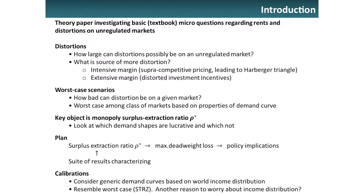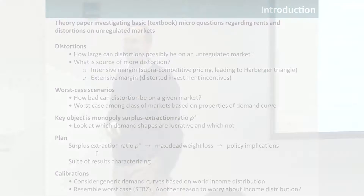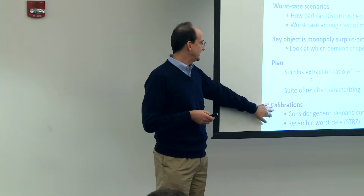Once we've done that — that's the first half of the talk — we're going to spend a lot of time discussing the geometry of demand curves: if you have a particular market, what things to look for, a suite of results characterizing rho star. Then, if you don't ask any questions, we'll get to the empirical part — some calibrations basically looking at the demand for widgets using a generic demand curve, taking the distribution of world income to generate our demand curve, which turns out to resemble our worst-case scenario.